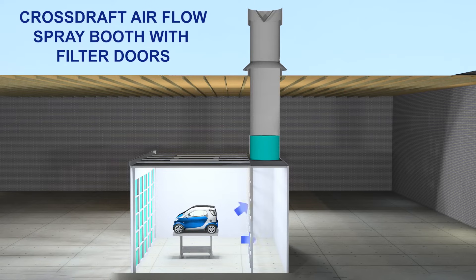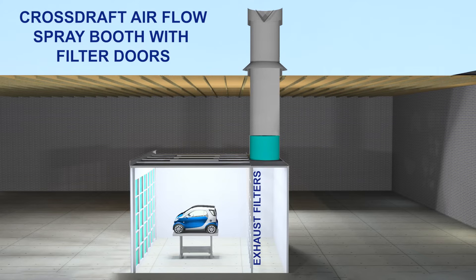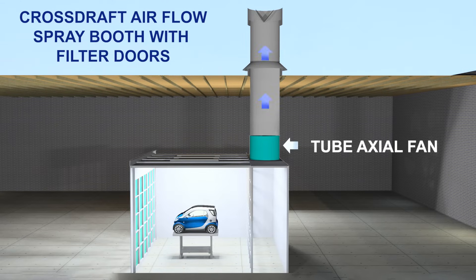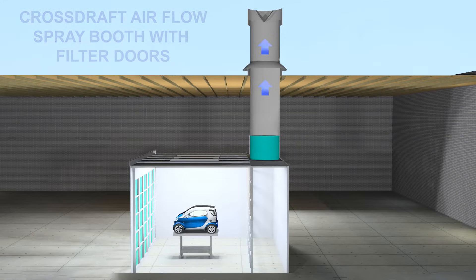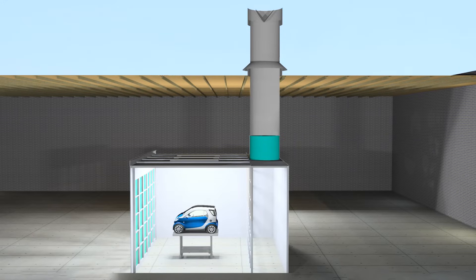The Crossdraft spray booth draws outside air into the booth and exhausts the paint-laden air through exhaust filtration at the rear of the booth. From there, it passes through the exhaust fan and up through the roof of your building in specialized ducting to the outside. The exhaust fan is a non-sparking bi-axial fan, so the flammable paint fumes and overspray not collected by the exhaust filtration will not catch on fire. This design is the most common type of airflow used in all industries.